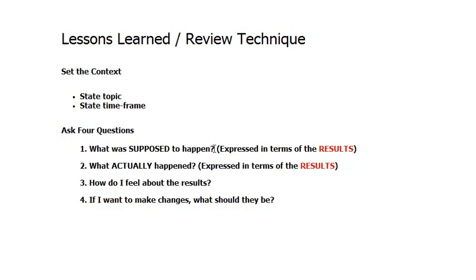What was supposed to happen? And now I've identified here on the slide explicitly that that needs to be expressed in terms of the results. Another way of saying that is what results did I expect to get? What actually happened? What results did I actually get? As opposed to what did I actually do? How do I feel about the results? So there's some introspection there about what your emotional feeling is in relation to the results.